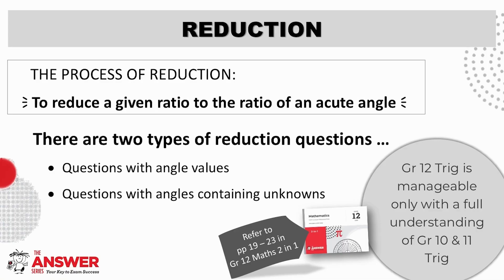So the process of reduction is to reduce a given ratio to the ratio of an acute angle. You may have noticed that we have already been using this language in the previous videos. We need to be able to reduce the ratios of questions with angle values as well as questions with angles containing unknowns. We are going to tackle this based on grade 10 and 11 trig knowledge first because when that is strong then grade 12 trig is so much more manageable.